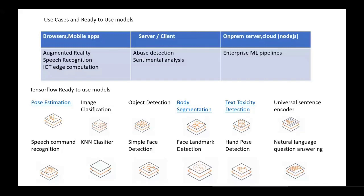Object detection is another model — previously this required Python and CNNs, as used in driverless cars — but that can now be replaced or augmented by client-side object detection. Body segmentation divides the body into almost six categories, defining it in terms of colors and textures — also available as a pre-built TensorFlow model.